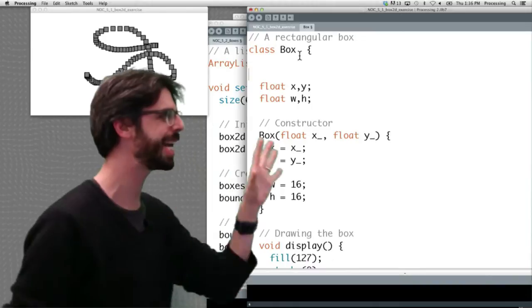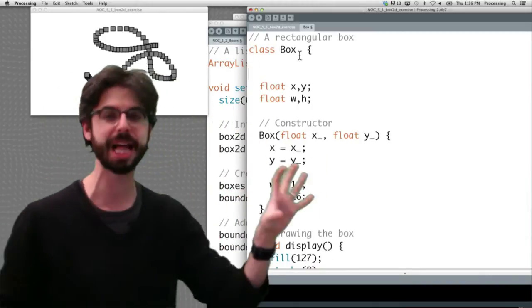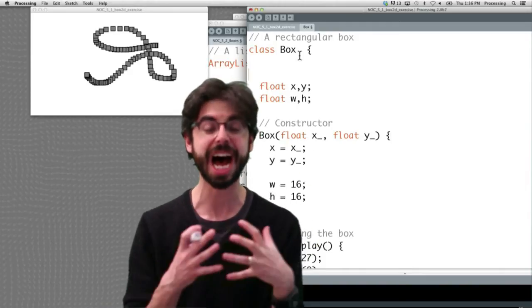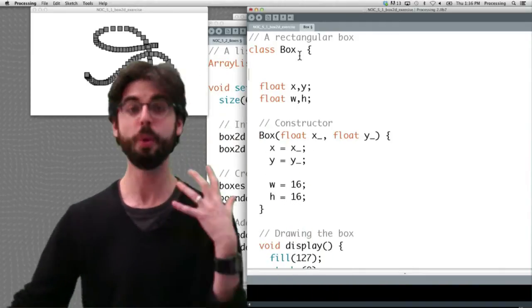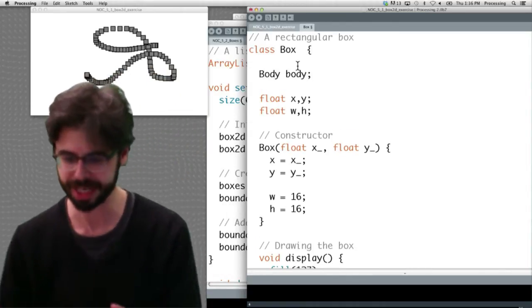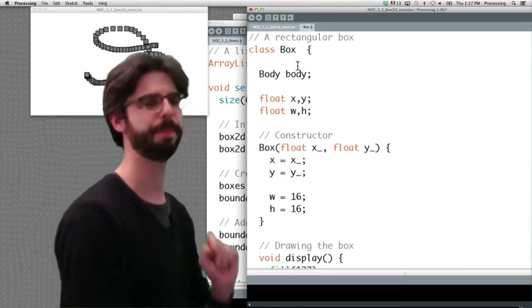Now we're going to take a different approach. Instead of writing all the code for the physics inside of this class, we're going to store a reference to a physics object that comes from Box2D. What is that physics object? I typed it in here before. It's a body.